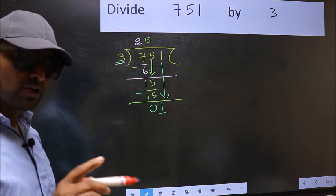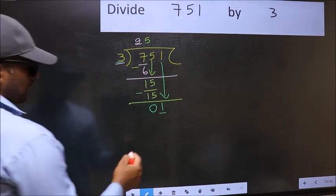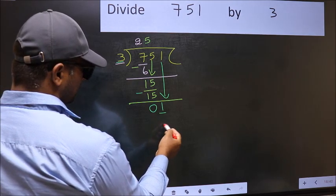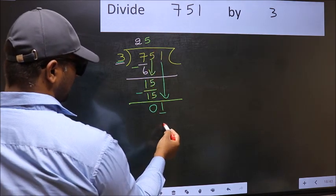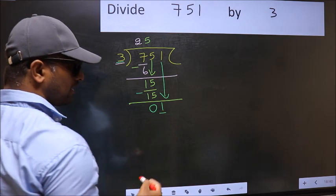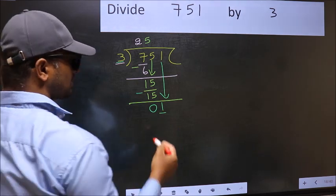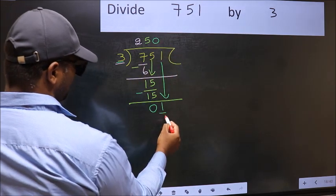Instead, what you should think of doing is, what number should be right here? If I take 1 here, I will get 3. But 3 is larger than 1. So what we should do is, we should take 0. So 3 into 0, 0.